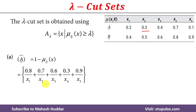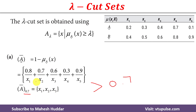Once we calculate the inverse of fuzzy set A, next we need to calculate the lambda cut of the inverse of fuzzy set A. In this case the lambda value is 0.7. The membership value of x1 is 0.8, which is greater than 0.7, so x1 is present. x2's membership value is 0.7, which is greater than or equal to 0.7, so x2 is also present. x3 and x4 values are 0.6 and 0.3 respectively — they are not greater than 0.7, so they are not present. Finally, x5's membership value is 0.9, which is greater than 0.7, hence x5 is present in the lambda cut set.